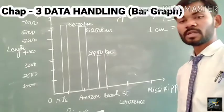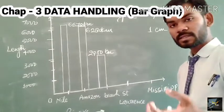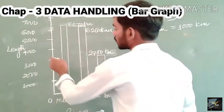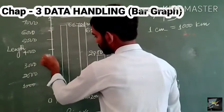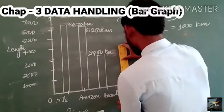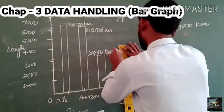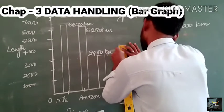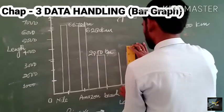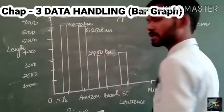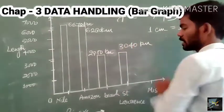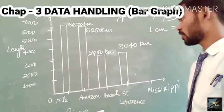Next is St. Lawrence. The St. Lawrence river's length is 3040 kilometers. Since 3040 is very close to 3000, the bar will be drawn at approximately that same point. This bar represents 3040 kilometers, which is the length of the St. Lawrence river.